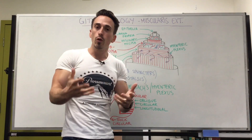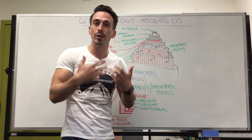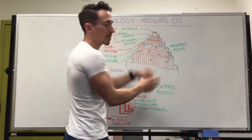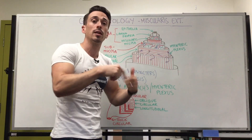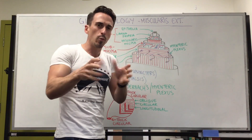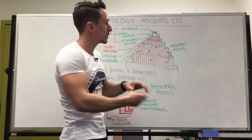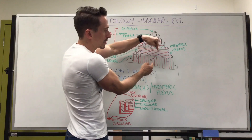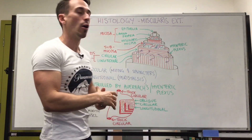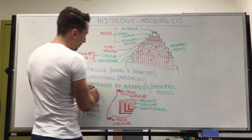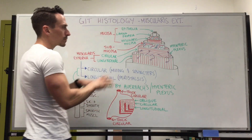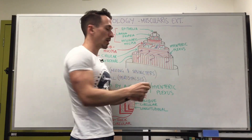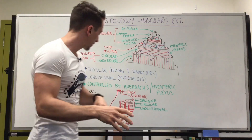The longitudinal muscle, when it contracts, shortens the tube, which means it helps push food along. The movement of foodstuffs through the GIT is called peristalsis, and that's driven importantly by this longitudinal muscle layer. Now, what tells this muscle to contract? There's another plexus — a plexus is just a braiding of nerves — that sits between the circular and longitudinal muscles, called the myenteric plexus, also known as Auerbach's plexus. This myenteric plexus is really important because it tells the circular smooth muscle and the longitudinal muscle to contract.